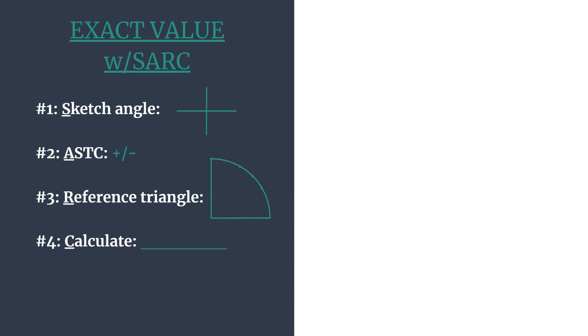So here's our outline and SARC is just an acronym to help you remember the steps. S stands for sketch the angle - we'll do that for the terminal side. A stands for ASTC, which helps us know which trig functions are positive in each of the quadrants so that we can decide if our final answer should be positive or negative. R stands for our reference triangle, so we'll find the reference angle and then the special right triangle and coordinates that go with that angle. And C stands for calculate, so we'll calculate the trig ratio.